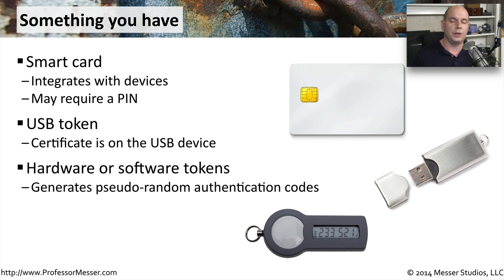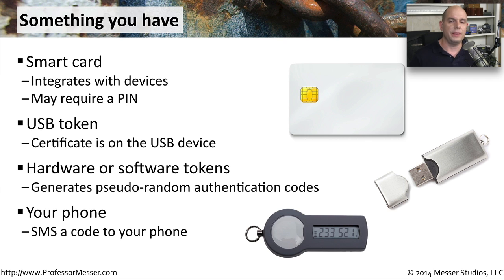There might also be software tokens or hardware tokens where you are presented with a pseudo-random number. You not only provide your username and password, but you also enter whatever number is listed on that software token. Another way to do this is with our phones — once we put in our username and password, the system may send a text message, and we have to repeat back into the system what was listed in that text message. This is another way to prove who we are based on something we have with us.